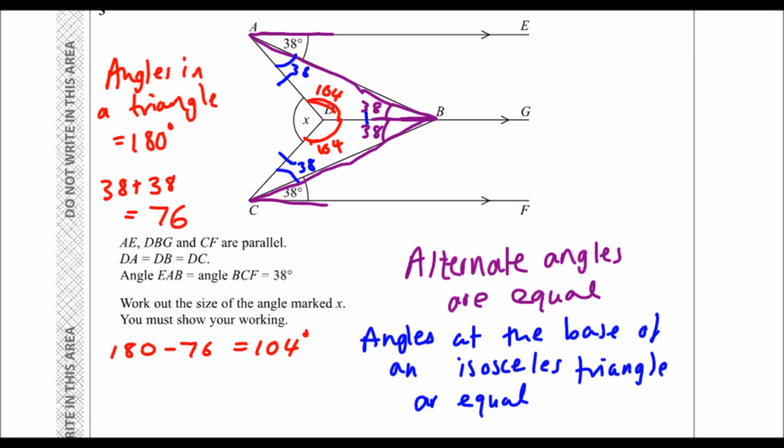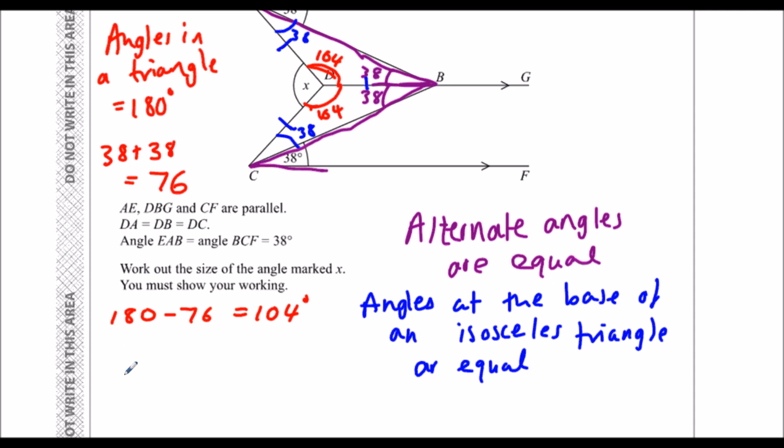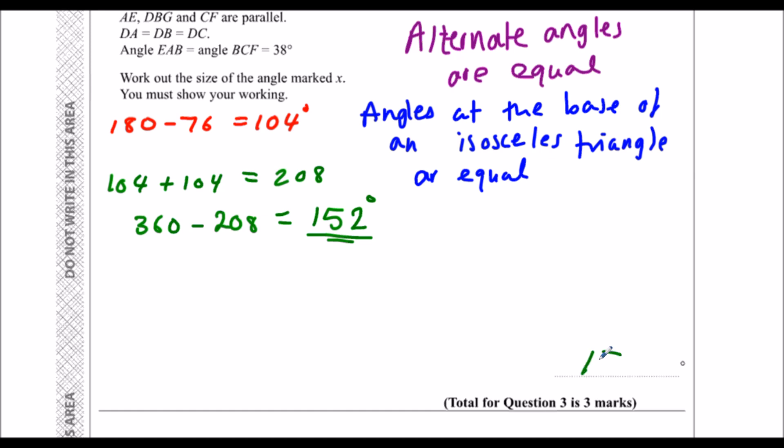So there's one thing left to do. Angles around a point equal 360. So I've got 104 and 104 at the moment, which is 208. If I take it away from 360, so 360 take away 200 is 160, and then 160 take away 8, that's 152. So angle X must be 152 degrees.